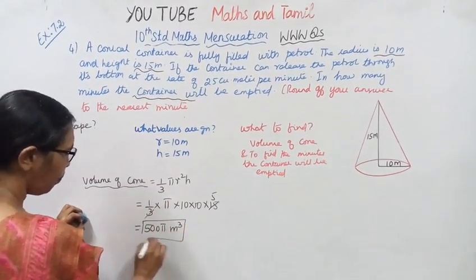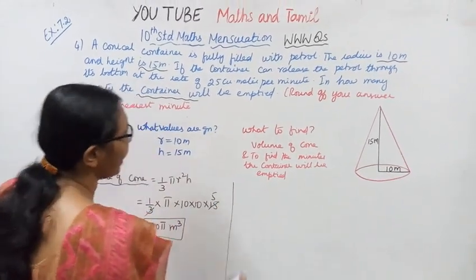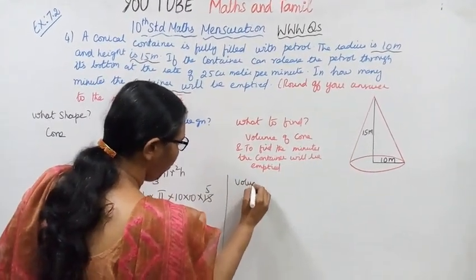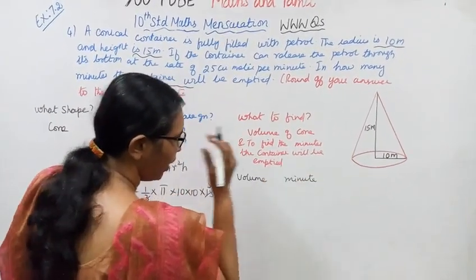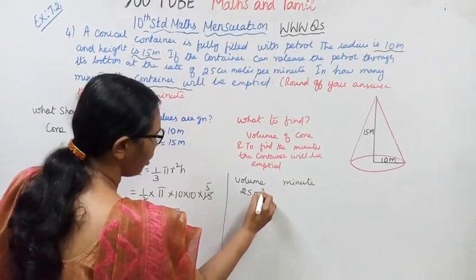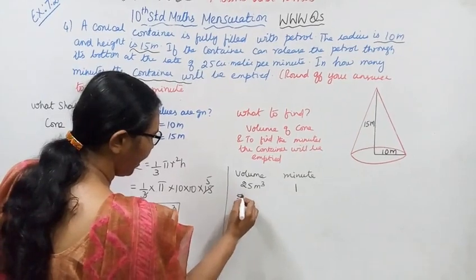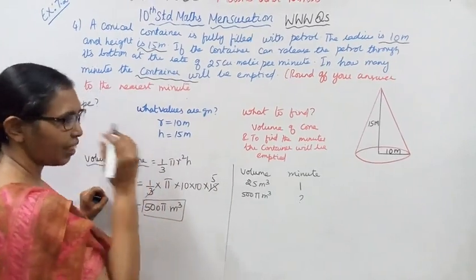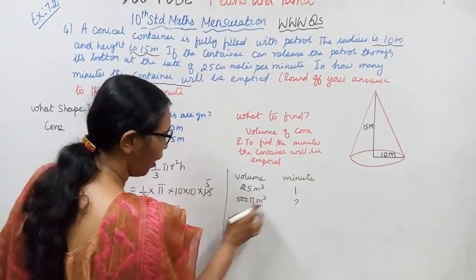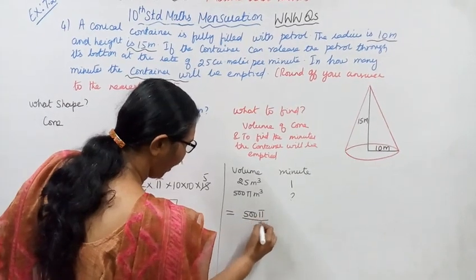Volume of cone is 505 meter cube. The conical container has petrol of 505 meter cube. How many minutes the container will be empty? The volume and minutes are in direct variation. 25 meter cube releases in one minute, 505 meter cube will take how many minutes?